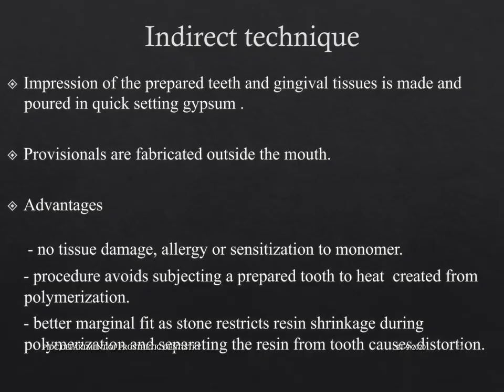In the indirect technique, an impression of the prepared teeth and gingival tissues is made and poured in quick-setting gypsum. The provisionals are fabricated outside the mouth. Advantages of this technique are that there is no tissue damage, allergy, or sensitization to monomer. The procedure avoids subjecting a prepared tooth to heat created from polymerization. Better marginal fit is achieved as the stone restricts resin shrinkage during polymerization.